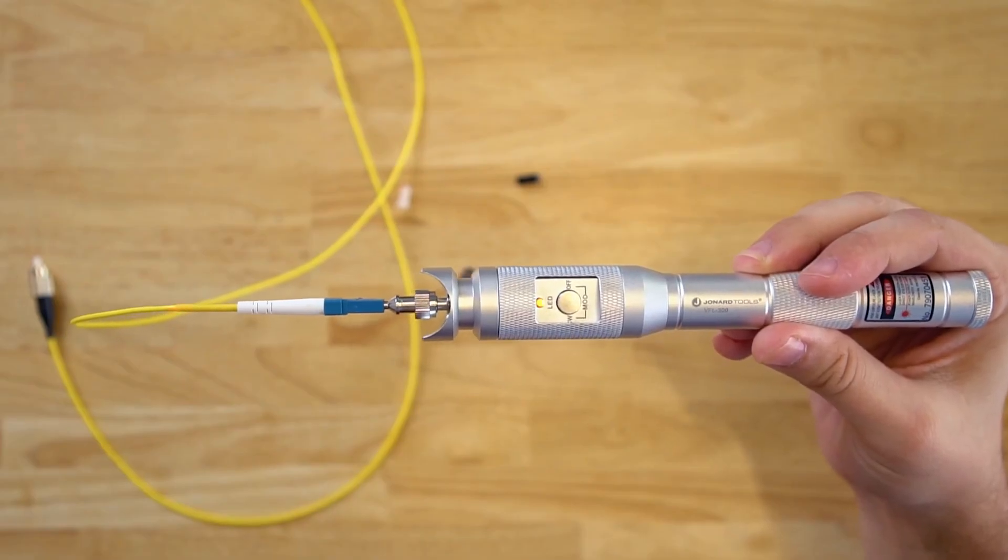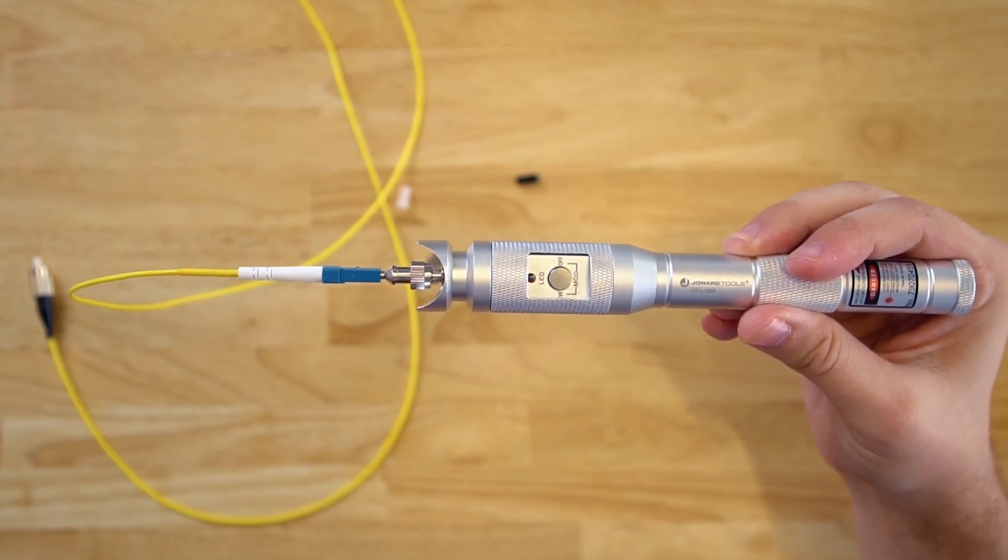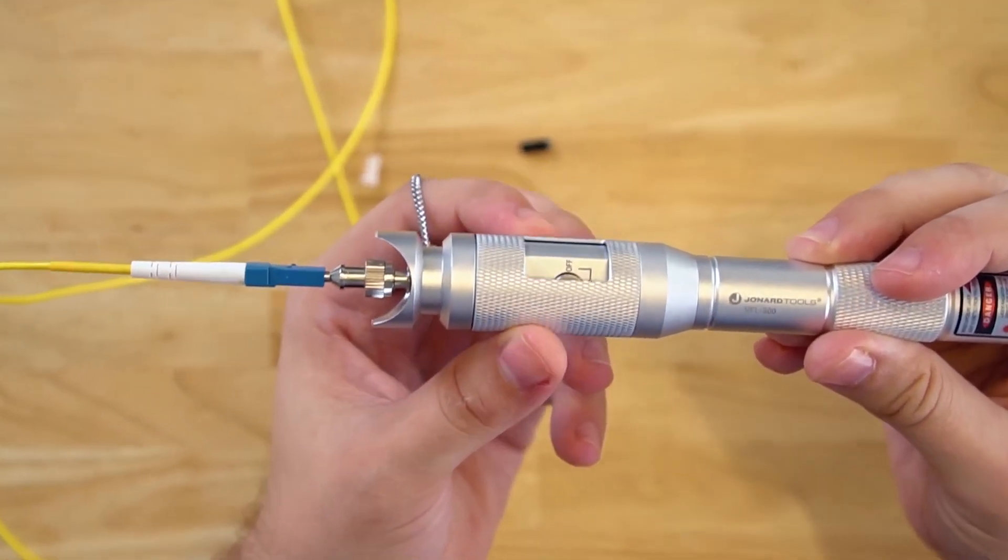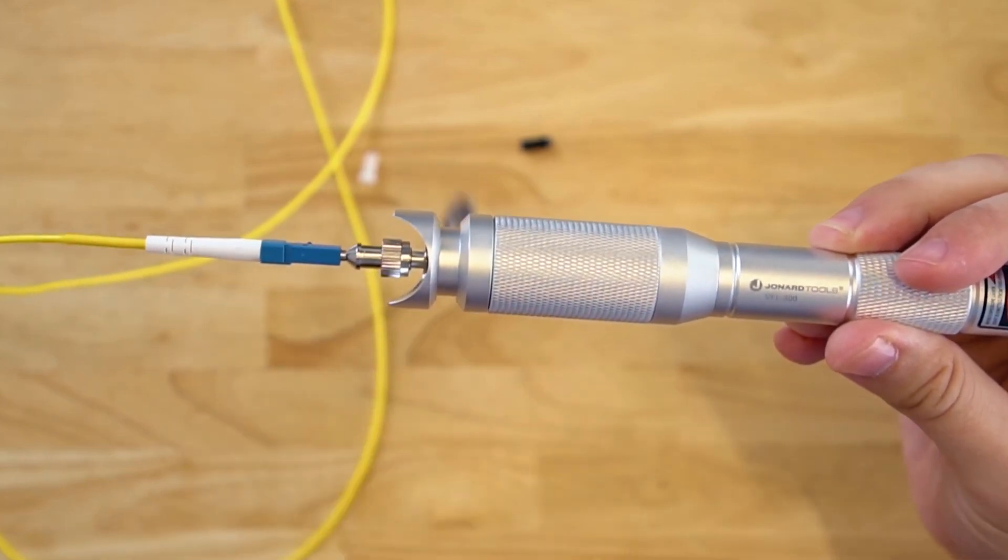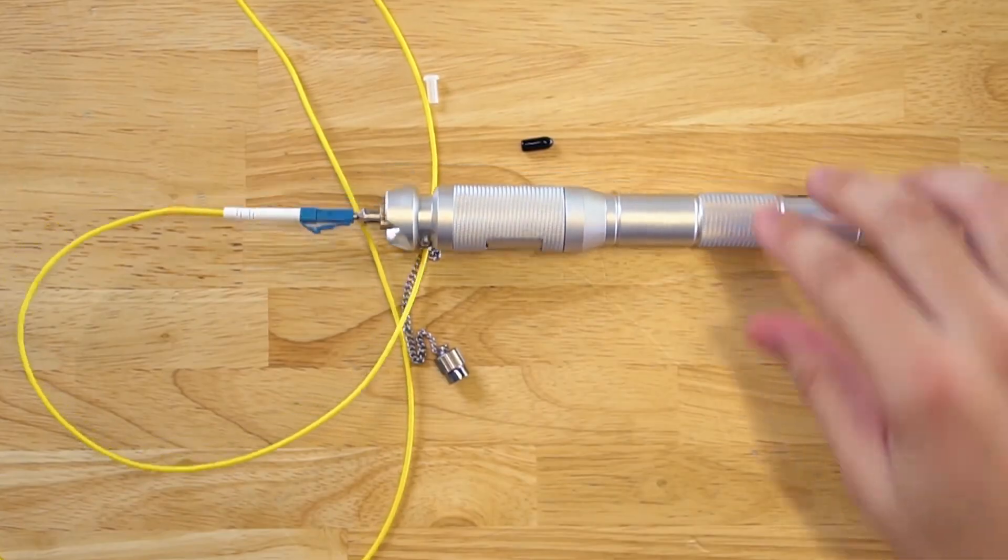If you are testing a very long fiber optic cable and you want to prevent any accidental button presses, you can simply slide the protective sleeve over and leave the VFL down while you inspect the fiber optic cable.